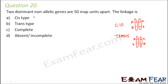The two dominant non-allelic genes are 50 MAP units apart — meaning they are two different genes, not two alleles of the same gene. At 50 MAP units, cis type and trans type options are uncertain. Looking at that distance, 50 MAP units is quite far, so we are not very sure if the genes are actually linked. Therefore, the most appropriate option would be absent or incomplete.